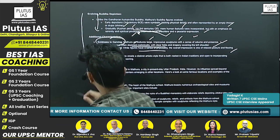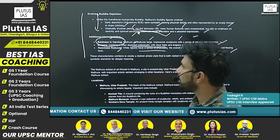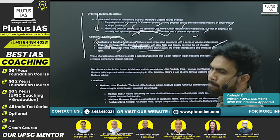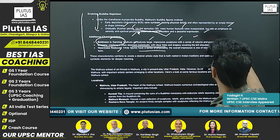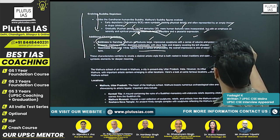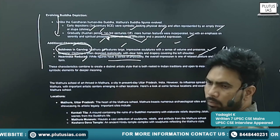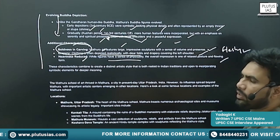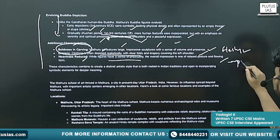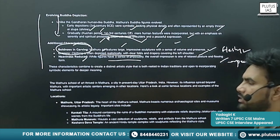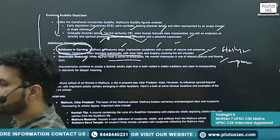While figures have a sense of physicality, the overall impression is one of relaxed posture and flowing form. These are the distinct characteristic features of Mathura School of Art. You will majorly see a fleshy body, not a muscular body.